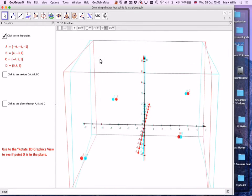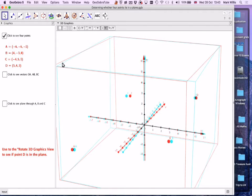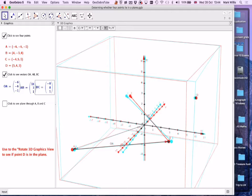What we've got to determine is whether these four points actually lie in a plane. To do that, we've got to find the vector OA, then find the vector AB and the vector BC, then make a vector equation using that, and then see if the point D actually lies in the plane algebraically. We'll come back to this diagram in a minute.